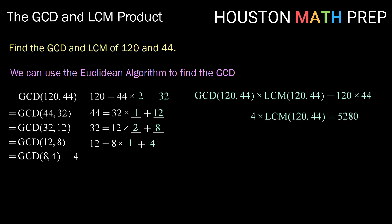To solve for our least common multiple we would divide both sides by 4, leaving us with the least common multiple of 120 and 44 being 5280 divided by 4, or 1320.